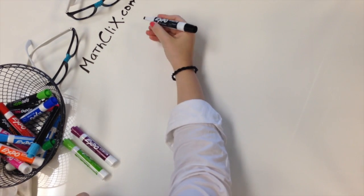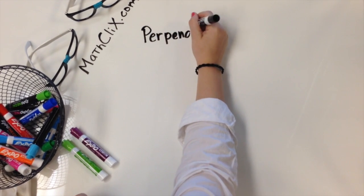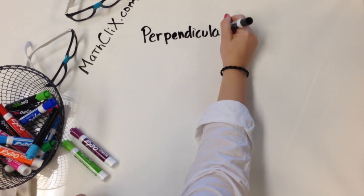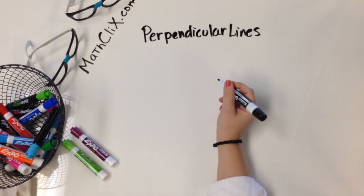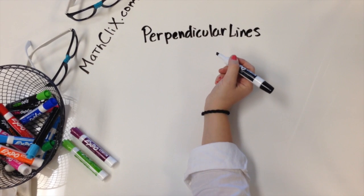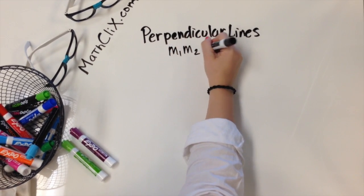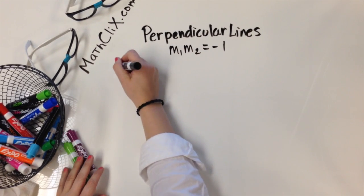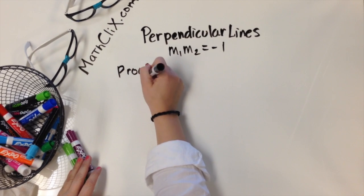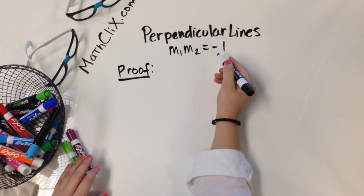Alright, let's talk about perpendicular lines. What we hear most about perpendicular lines in our algebra classes is that the product of their slopes is equal to negative 1. So we're going to provide a proof for that today because that's what we most often don't get to see - the reason why that's true.